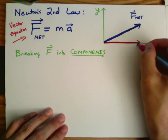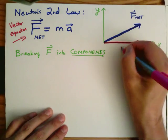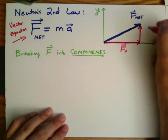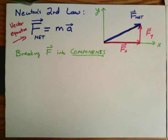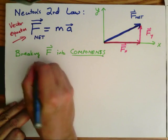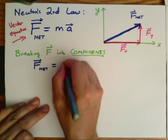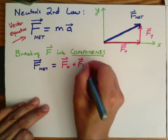For example, I can draw a horizontal vector, F sub x, which is lined up with the x component, and I can draw a vertical vector, F sub y, which is lined up with the vertical component. Then that force is equal to the vector sum of F sub x, the component in the x direction, plus F sub y, the component in the y direction.